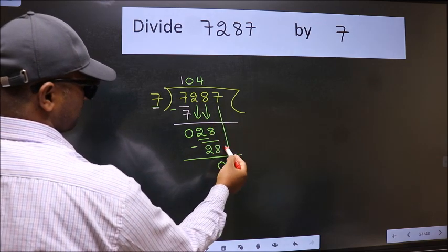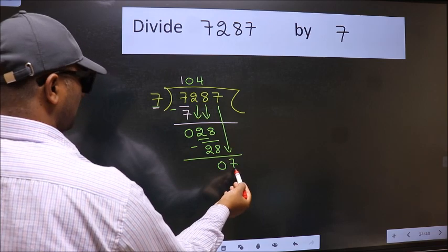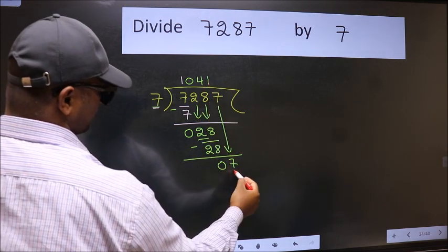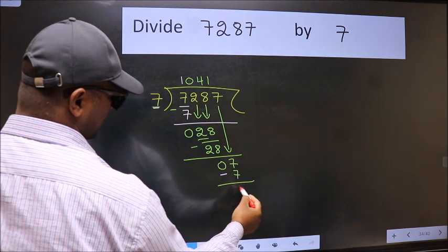After this, bring down the beside number. 7 down. When do we get 7 in 7 table? 7 once 7. Now we subtract. We get 0.